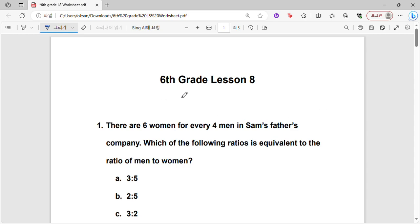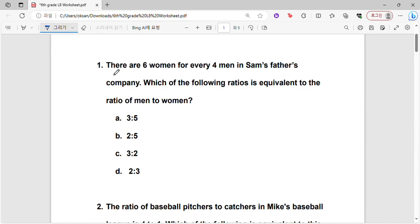Hello everyone, today we're going to go over sixth grade lesson 8. Okay, so first question: there are 6 women for every 4 men in Sam's father's company. Which of the following ratios is equivalent to the ratio of men to women?